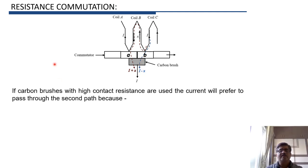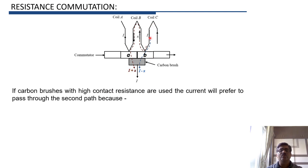When the copper brush is replaced by a carbon brush with high resistance, most of the current will flow through the second (longer) path and less current will flow through the first (shortest) path. This happens for two reasons.